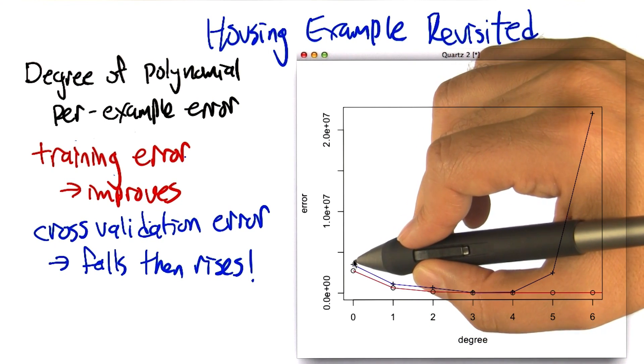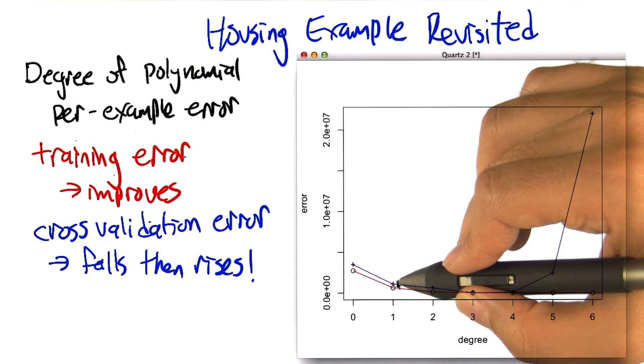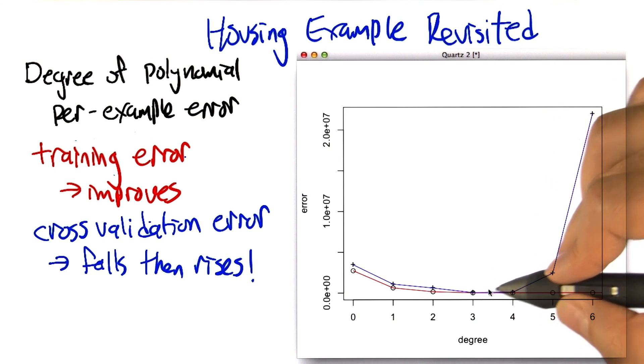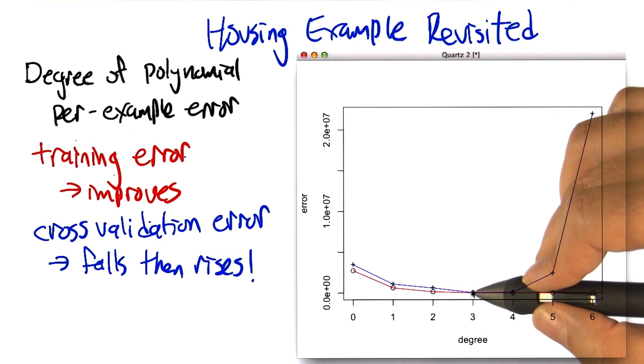But now let's look at what happens as we start to increase the degree—we've got the ability to fit this data better and better and better. And in fact, down at, say, three and four, they're actually pretty close in terms of their ability to fit these examples.